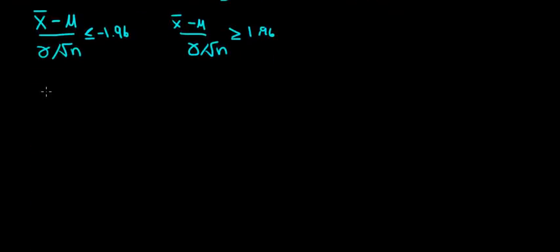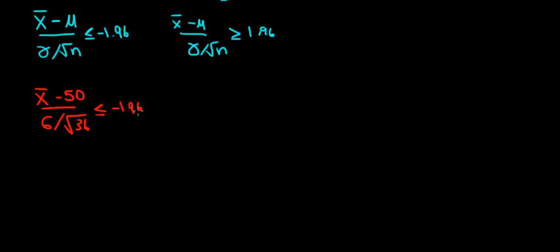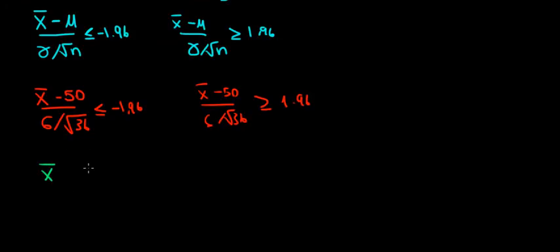Working out the math, we would reject the null hypothesis if the sample mean minus 50, divided by 6 over the square root of 36, is less than or equal to minus 1.96, or greater than or equal to 1.96. Solving this, the sample mean must be less than or equal to 48.04, or greater than or equal to 51.96.